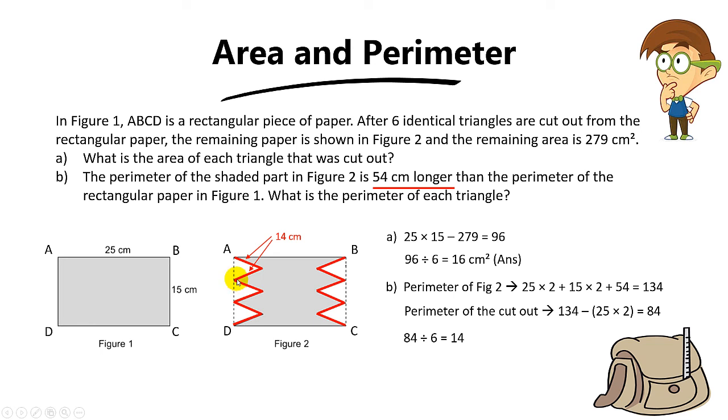They want the perimeter of each triangle. The perimeter, you take the 14 plus the length over here. We know the length over here will be 5 cm, because 15 divided by 3 is 5. So the perimeter of each triangle will be 14 plus 5, and the answer is 19 cm.